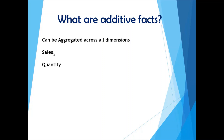Some examples of additive facts: Sales amount can be aggregated across the customer dimension, across the geography dimension, and across the time dimension — for example, what were the sales for the past 10 years, or what was the sales amount for 10 customers in a particular location. Another example is quantity of products — bought by a particular customer, in a particular store, over the last 10 years — you can aggregate them across all dimensions.